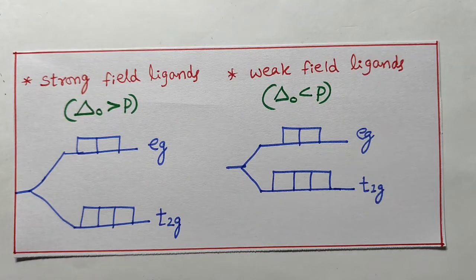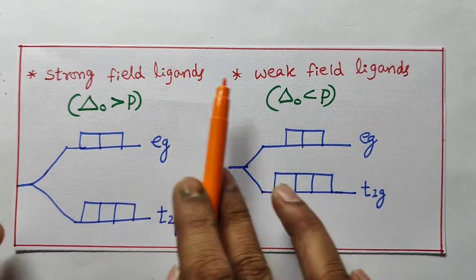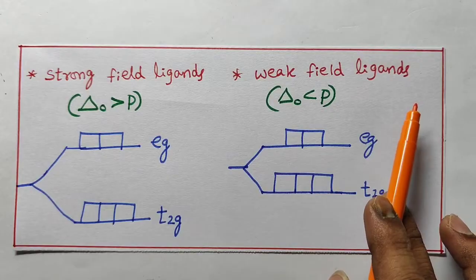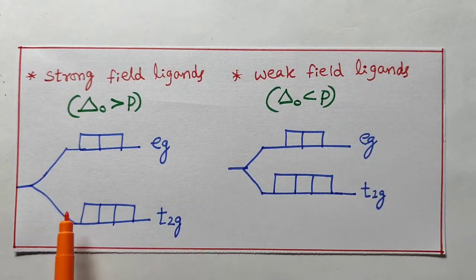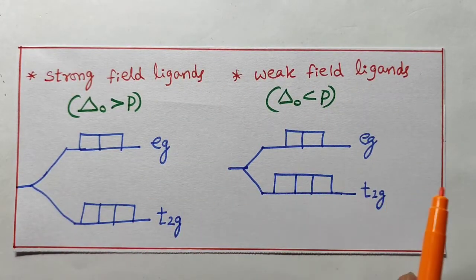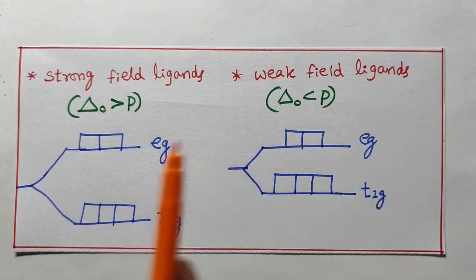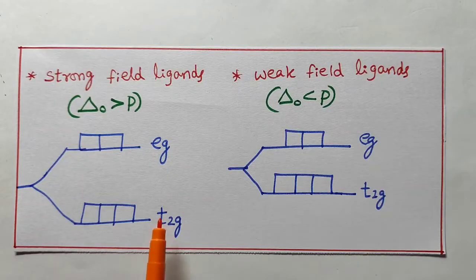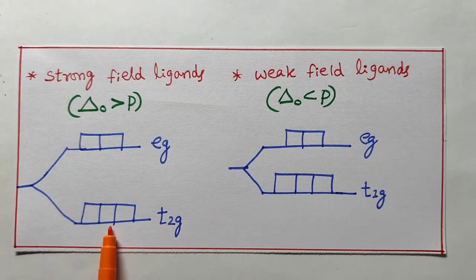Hello students, welcome to SN Chemistry. Today I am going to teach you how to write electronic configuration in presence of strong field ligands and weak field ligands. In absence of ligands, all 5 d-orbitals have the same energy, called degenerate orbitals. In presence of ligands, d-orbitals split into t2g and eg. The t2g set has 3 orbitals and the eg set has 2 orbitals.